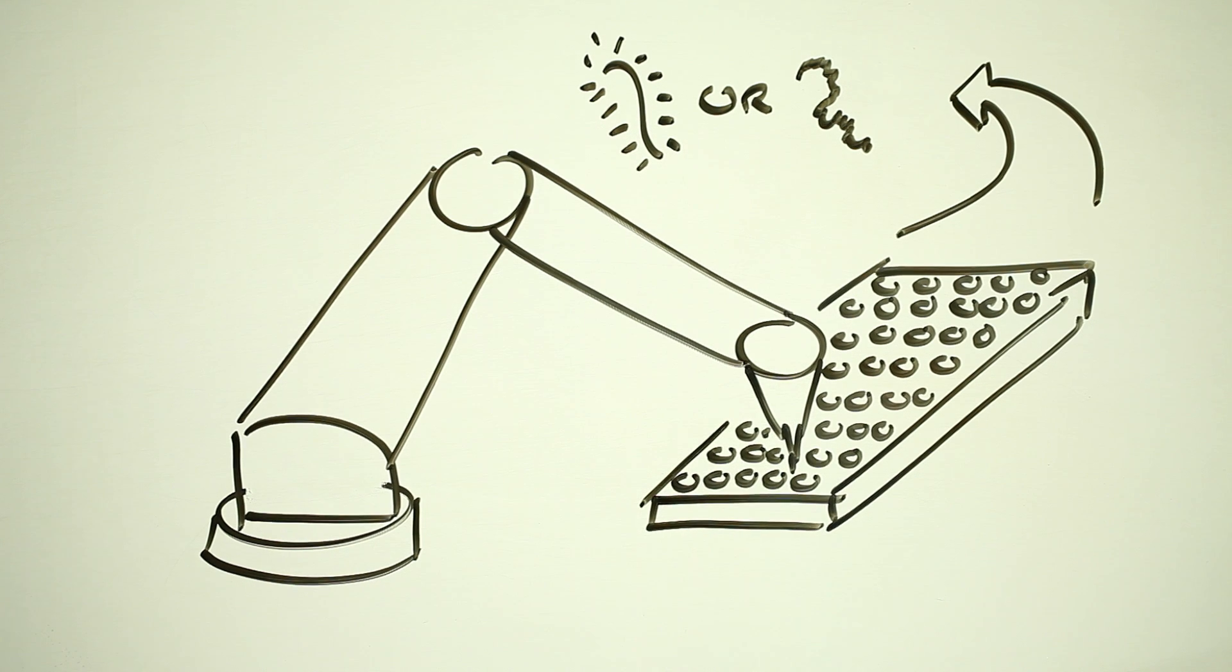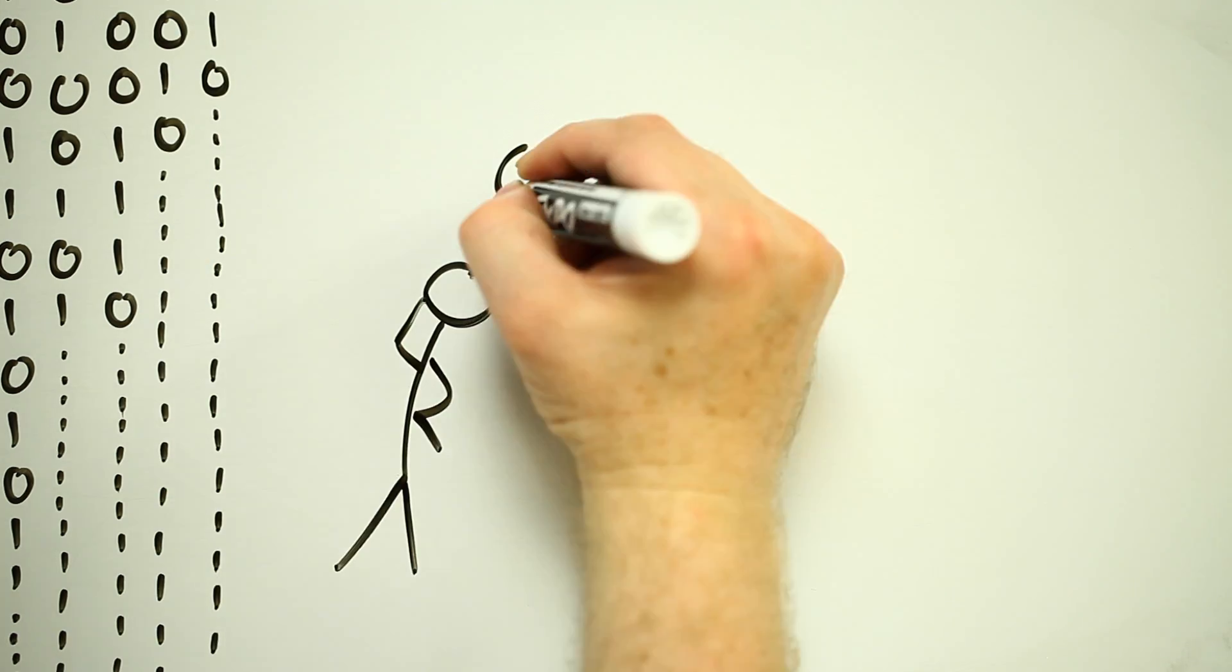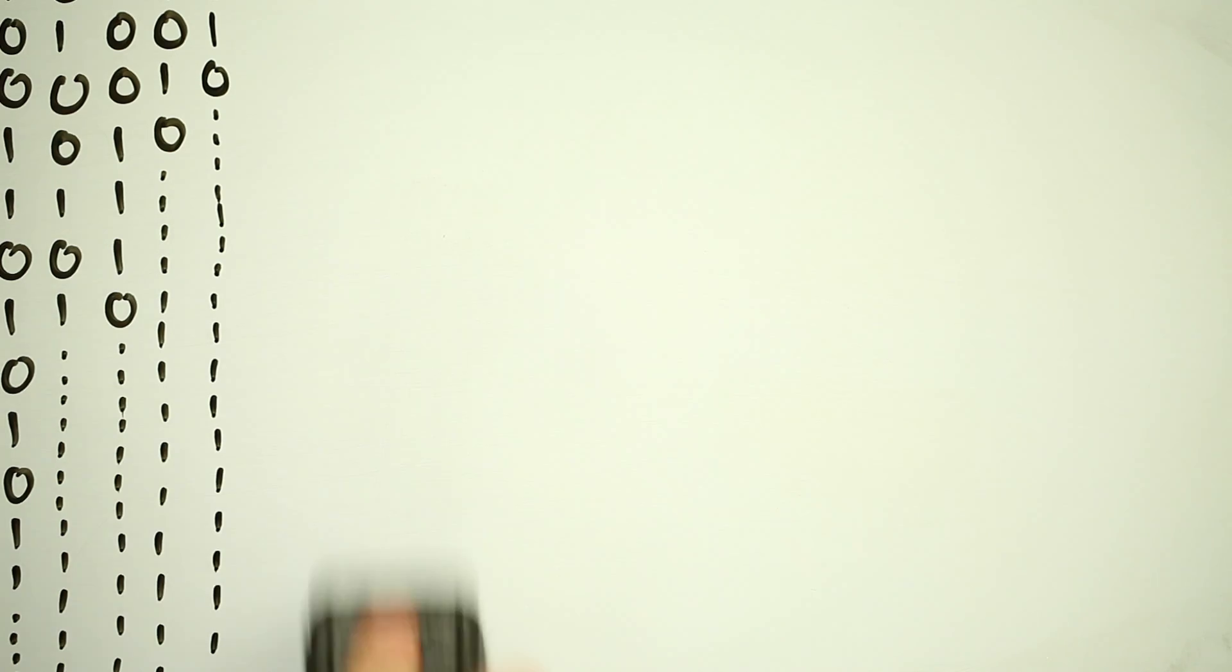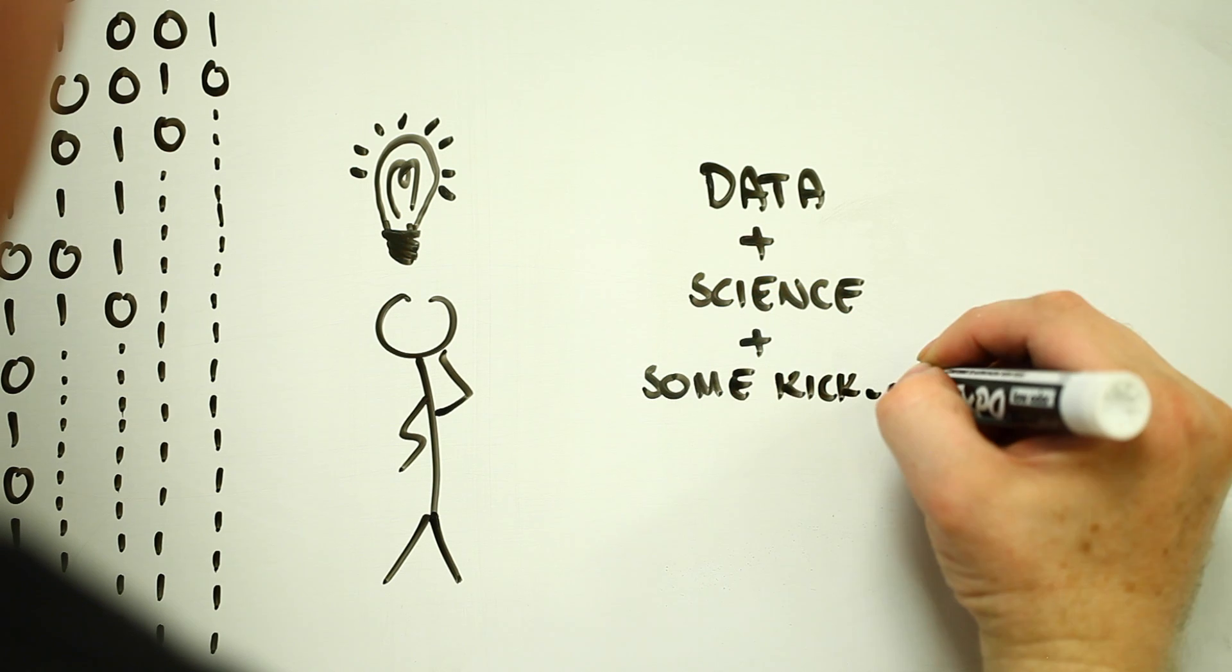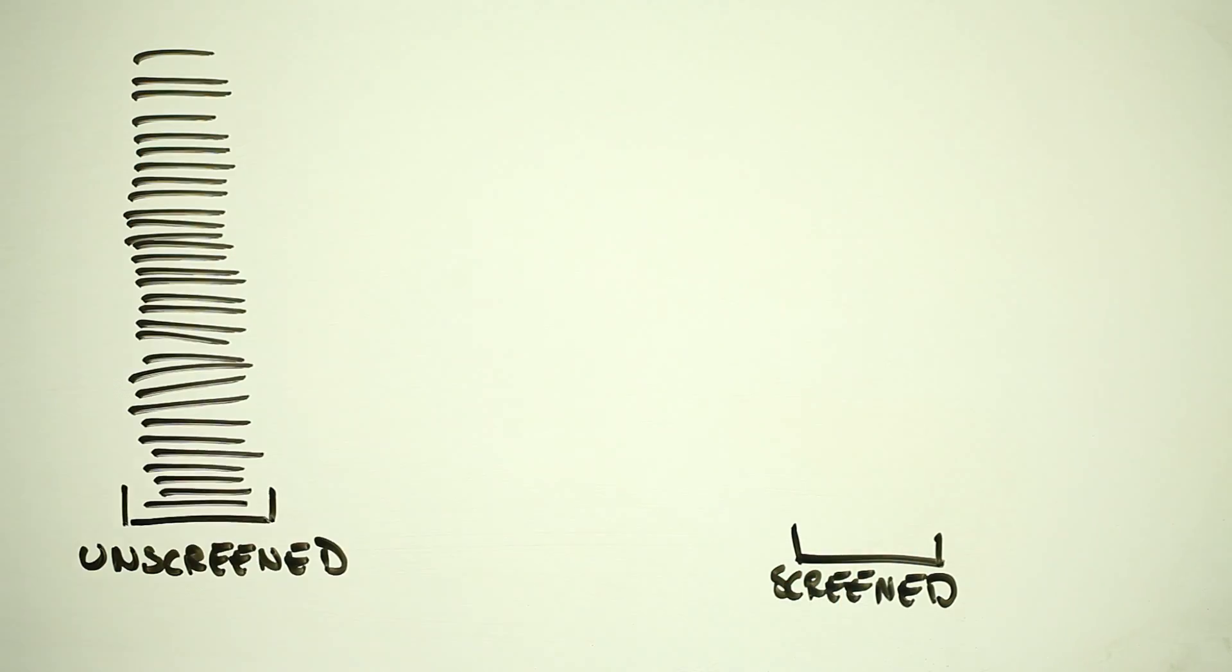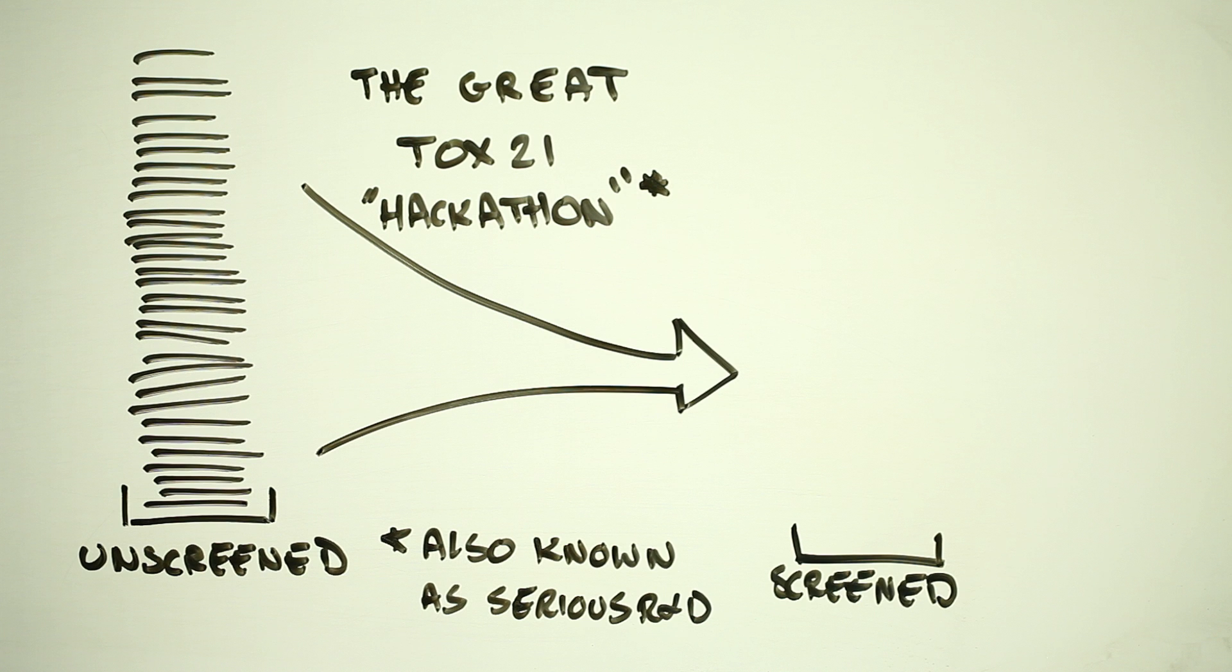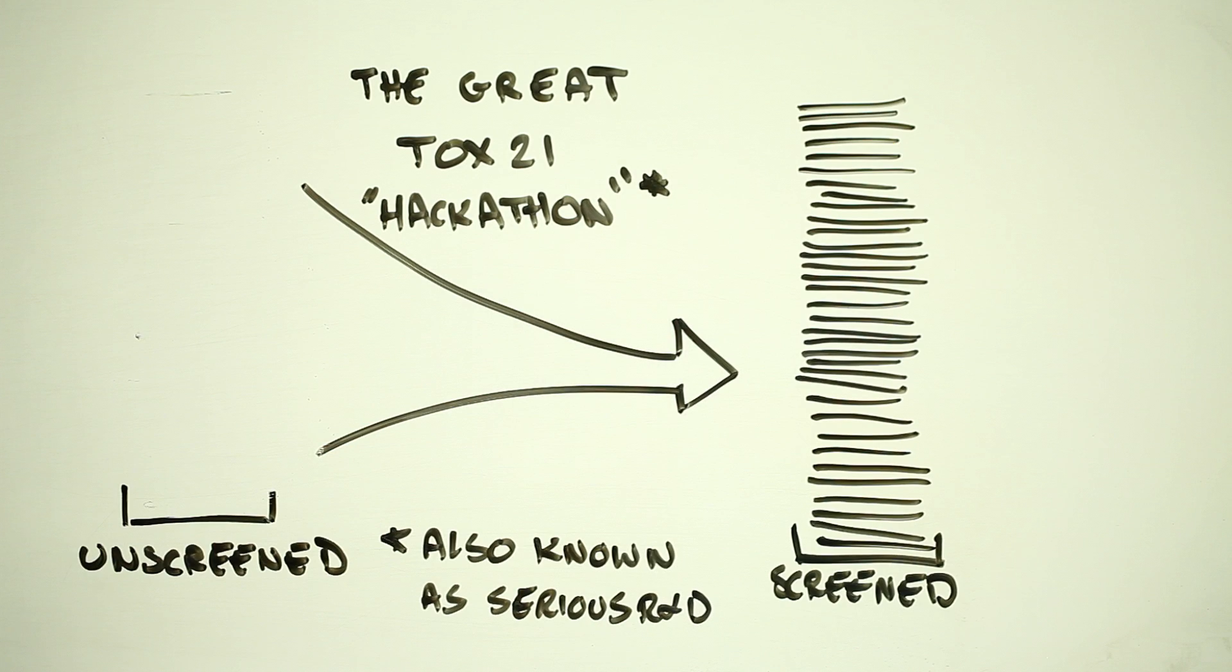However, high-throughput screening alone is pretty useless. It generates a ton of data, but on their own, these tests can't tell us whether a chemical will, in fact, cause harm. For this, we need to integrate high-throughput screening with some advanced science and powerful computational techniques. And this is where things get interesting. By combining high-throughput screening with advanced data processing and computer modeling, Tox-21 is developing tools that are enabling thousands of substances to be rapidly screened for potential toxicity.